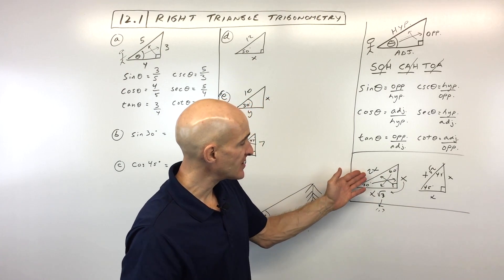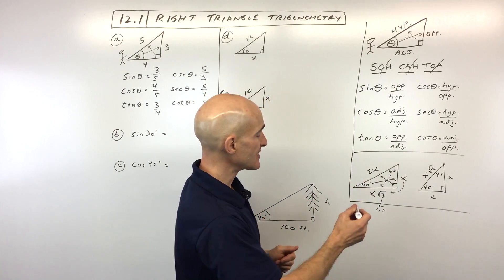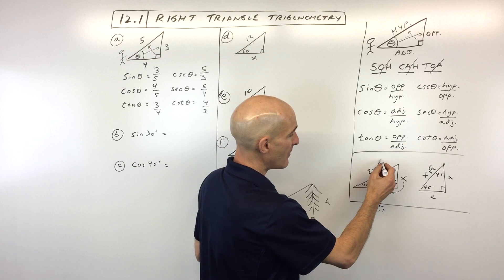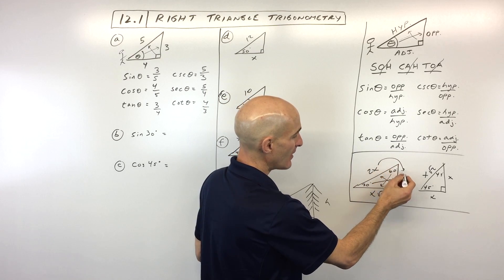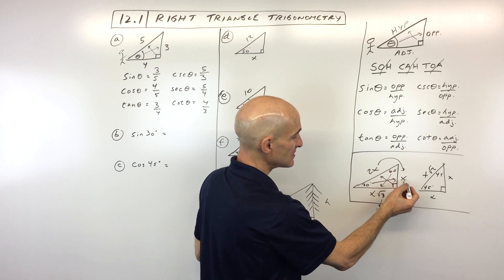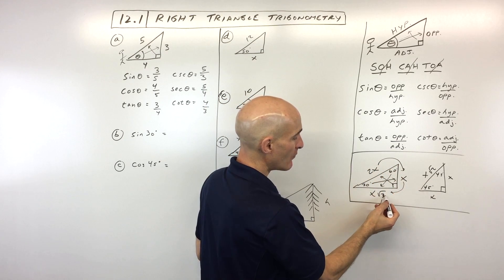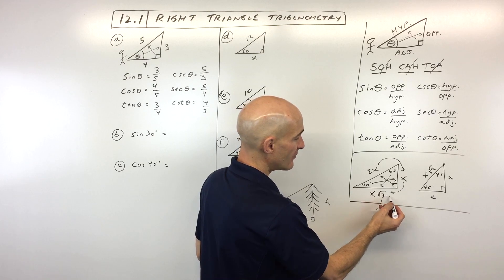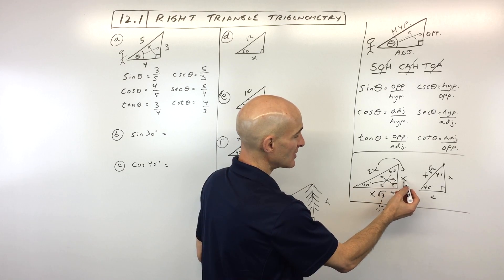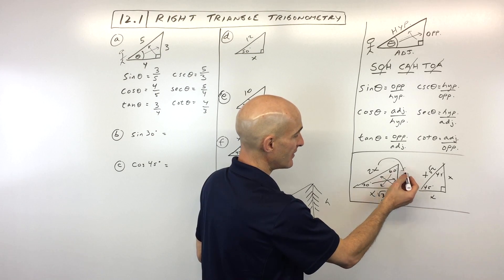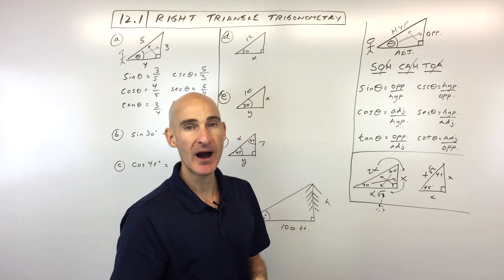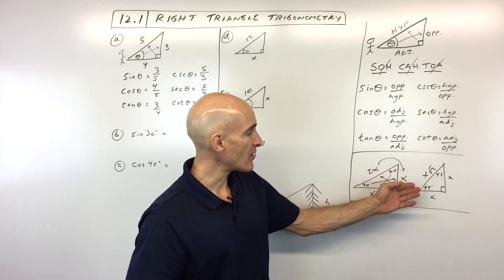When given a 30-60-90 triangle, if you have the hypotenuse, divide by 2 to get the short leg, then multiply by square root of 3 to get the longer leg. If you have the longer leg, divide by square root of 3 to get the short leg, then double to get the hypotenuse.